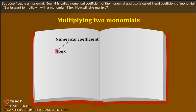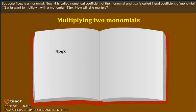Multiplying two monomials. Suppose 4pqx is a monomial. Here, 4 is called the numerical coefficient and pqx is called the literal coefficient of the monomial. If Sarita wants to multiply it with the monomial minus 13px, how will she multiply?